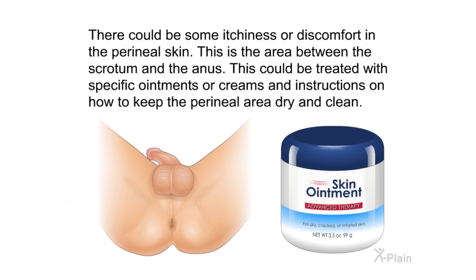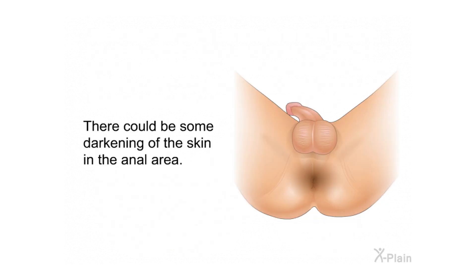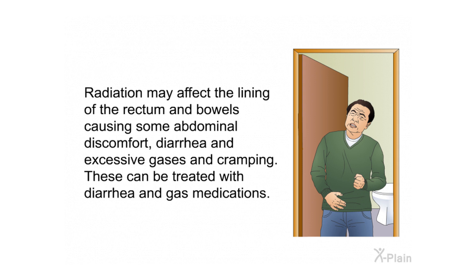There could be some itchiness or discomfort in the perineal skin, the area between the scrotum and the anus. This could be treated with specific ointments or creams and instructions on how to keep the perineal area dry and clean. There could also be some darkening of the skin in the anal area. Radiation may affect the lining of the rectum and bowels, causing abdominal discomfort, diarrhea, excessive gases, and cramping. These can be treated with diarrhea and gas medications.